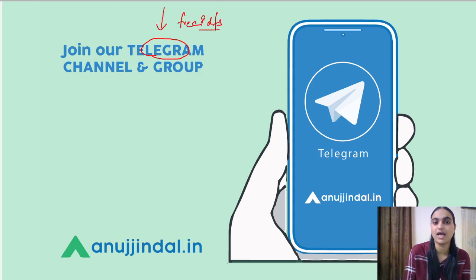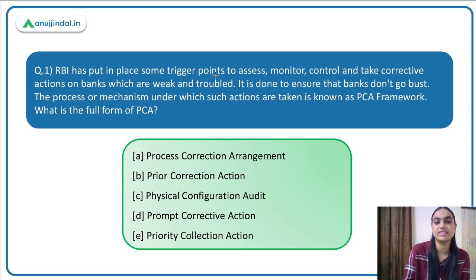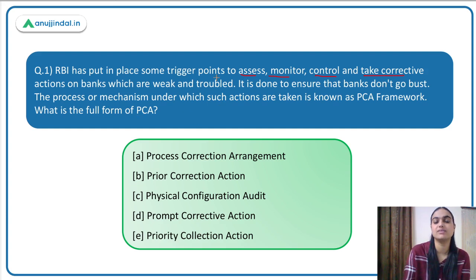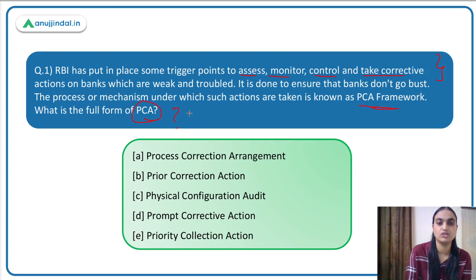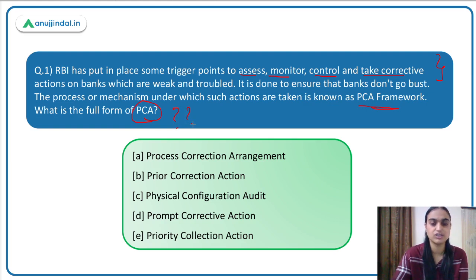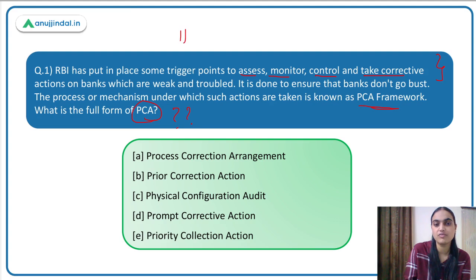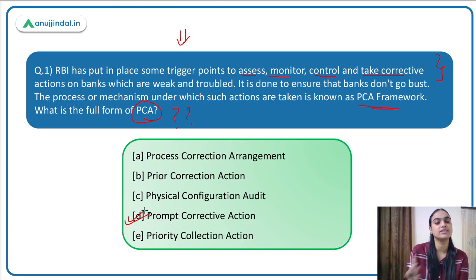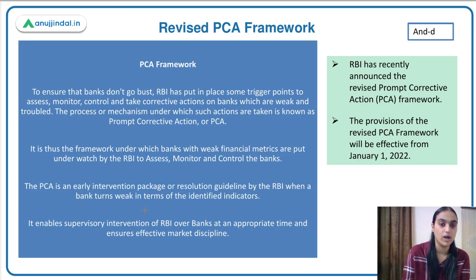Free PDFs of these sessions will be available on that group only. Moving on to the first question: RBI has put in place some trigger points to assess, monitor, control and take corrective action on banks that are weak and troubled, to make sure that banks don't go bust. The mechanism under which these actions are taken is known as the PCA framework. What is the full form of PCA? PCA stands for Prompt Corrective Action framework — answer is option D.